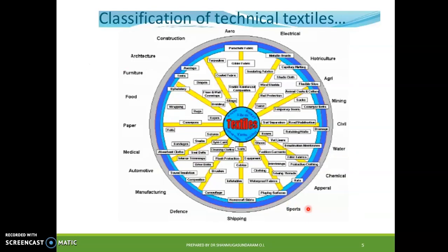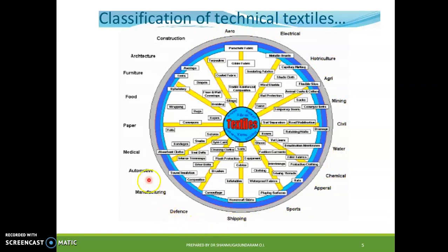Technical textiles have applications across a wide range of sectors including electrical, architectural, mining, civil, water, chemical, apparel, sports, shipping, defense, manufacturing, automotive, medical, paper industry, food industry, furniture, and construction.